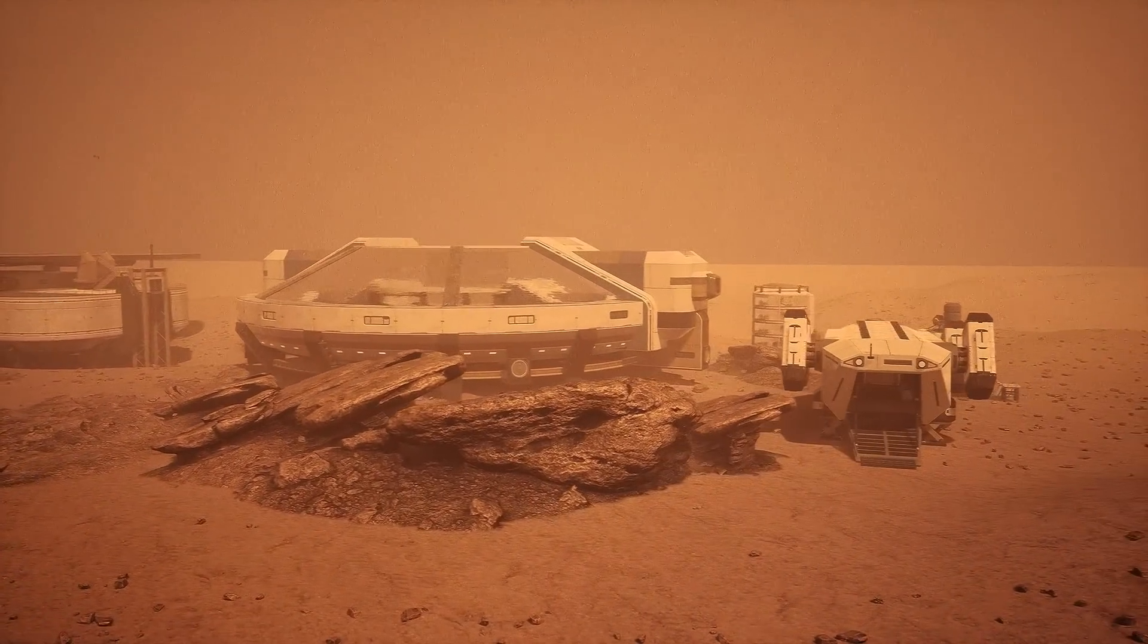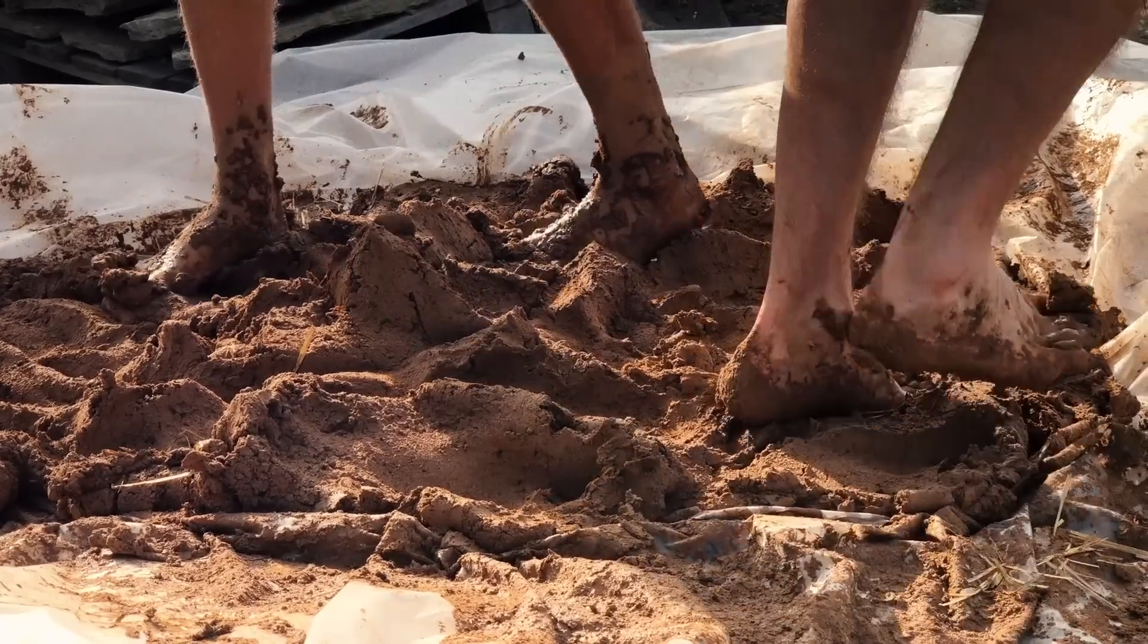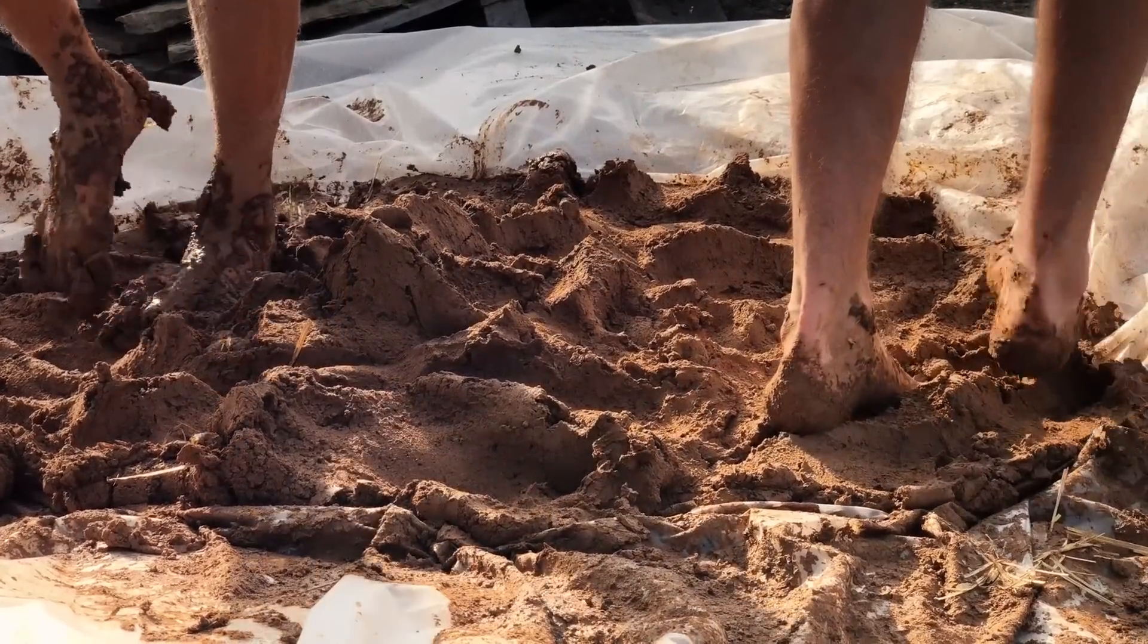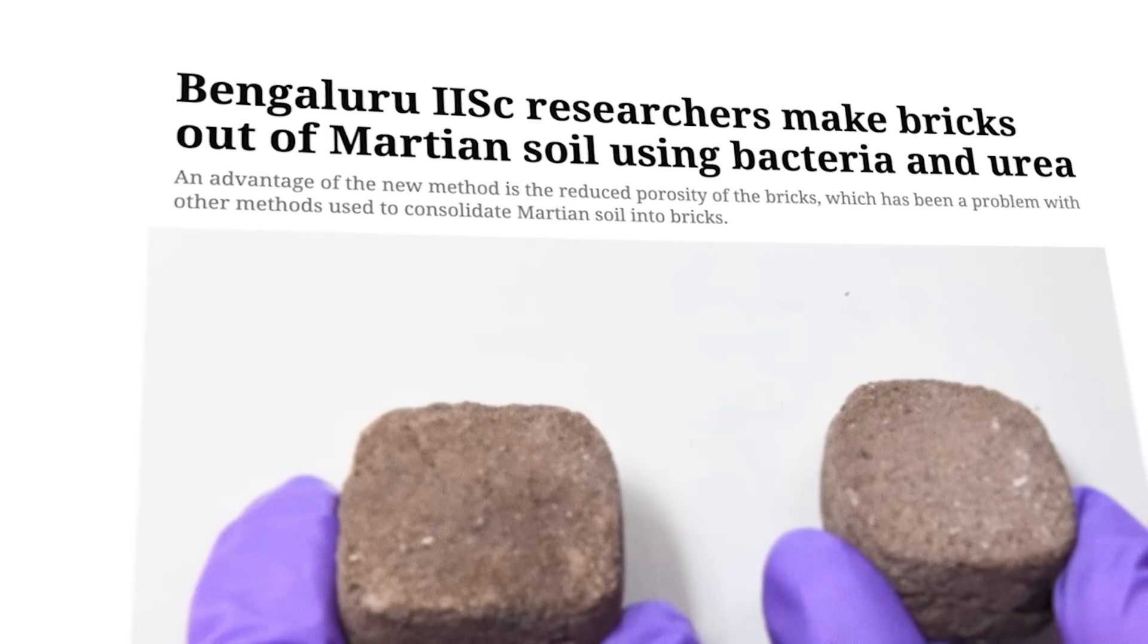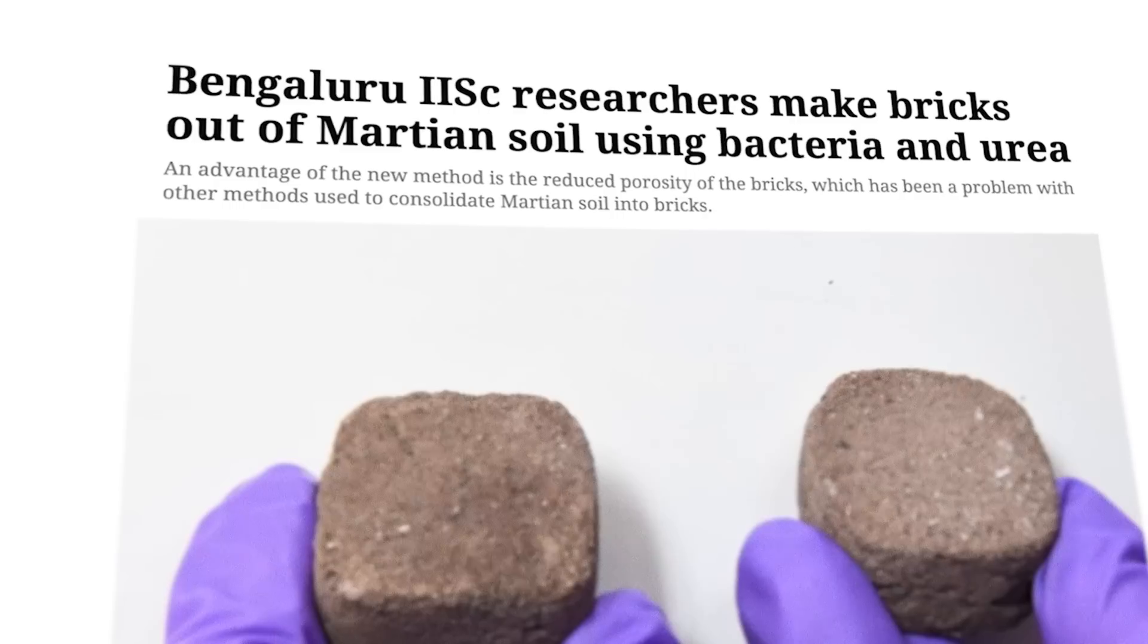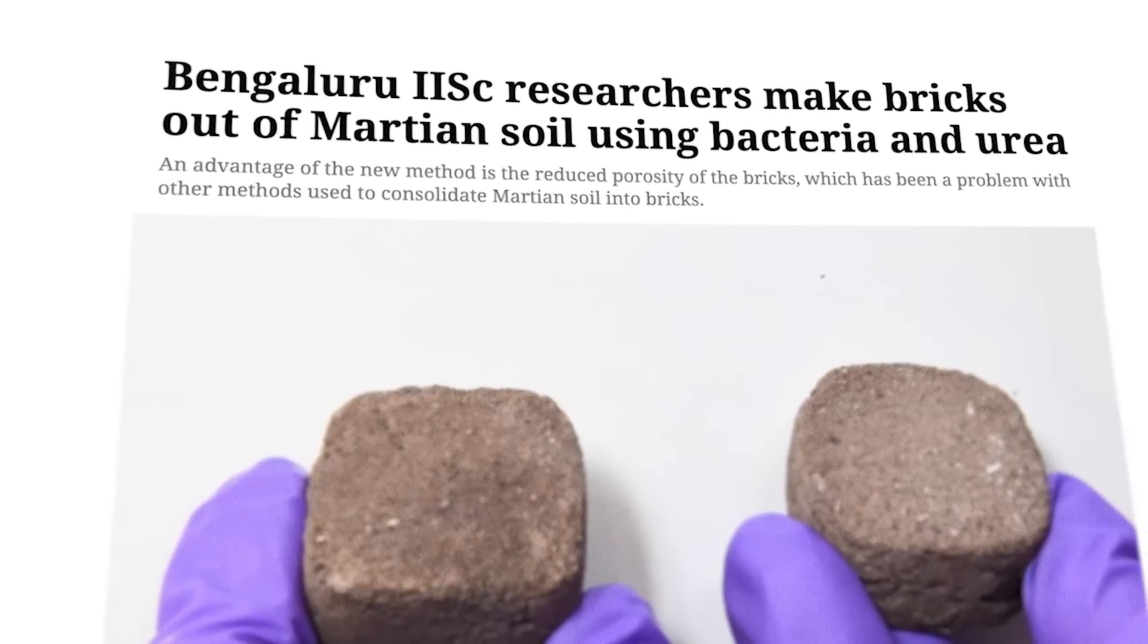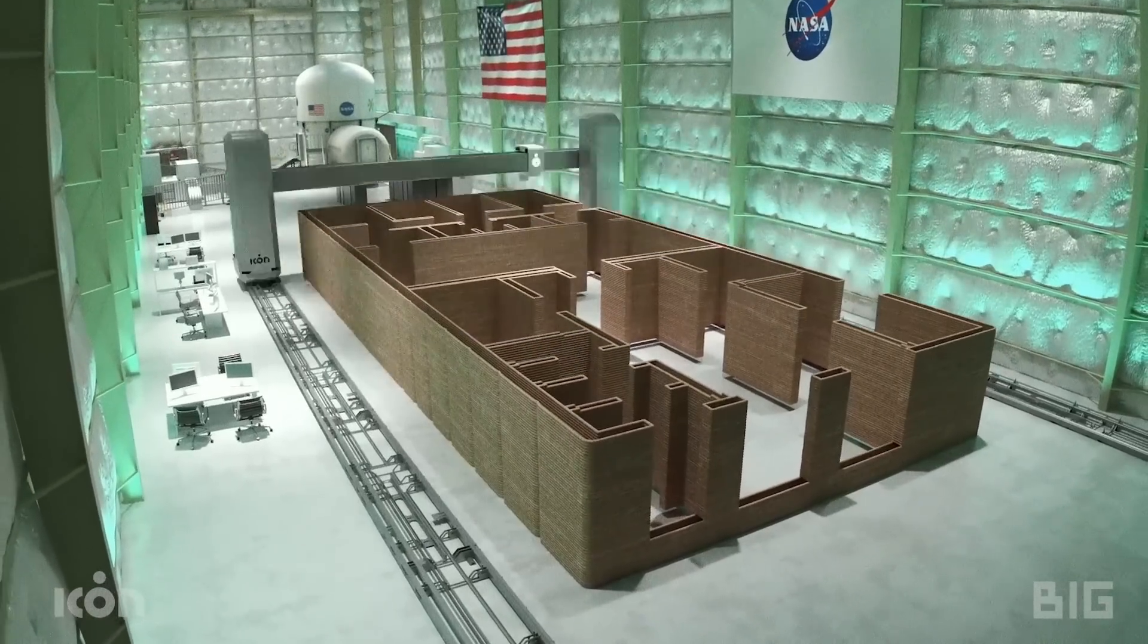We can also use waste byproducts to build houses on the Moon and Mars. No, we won't be sculpting with number two. When you extract the drinkable water from the number one, you're left with a compound called urea, which can be mixed with the surface dust, also called regolith, and that combination will form a geopolymer, which can then be used to build structures like landing pads and habitats.